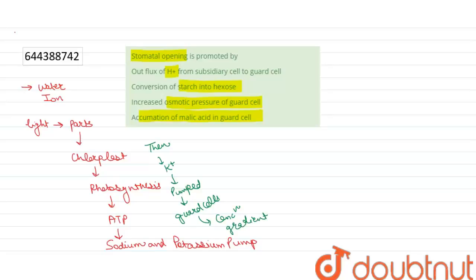For this uptake of potassium ions, H+ ions are required. Potassium ions are exchanged with protons. Uptake of potassium ions is referred to as influx of potassium ions into guard cells.